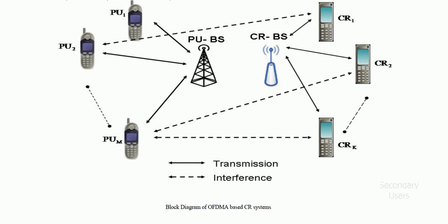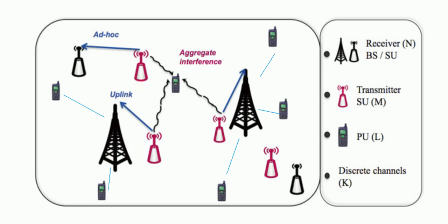Primary users are essentially the ones who are authorized to use the license bands of the cognitive radio system and they are allocated the spectrum by the cognitive radio base station.